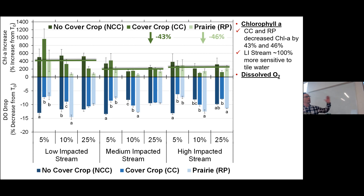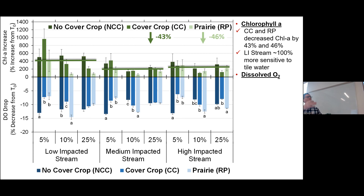Then we incubated for 14 days in a growth chamber at a 12 to 12-hour dark-light cycle — think of it as optimum algae-growing conditions. So this is kind of the potential for eutrophication. Then we pulled those samples out and analyzed for chlorophyll A as an increase in algae, and measured the drop in dissolved oxygen that would be associated with eutrophication.